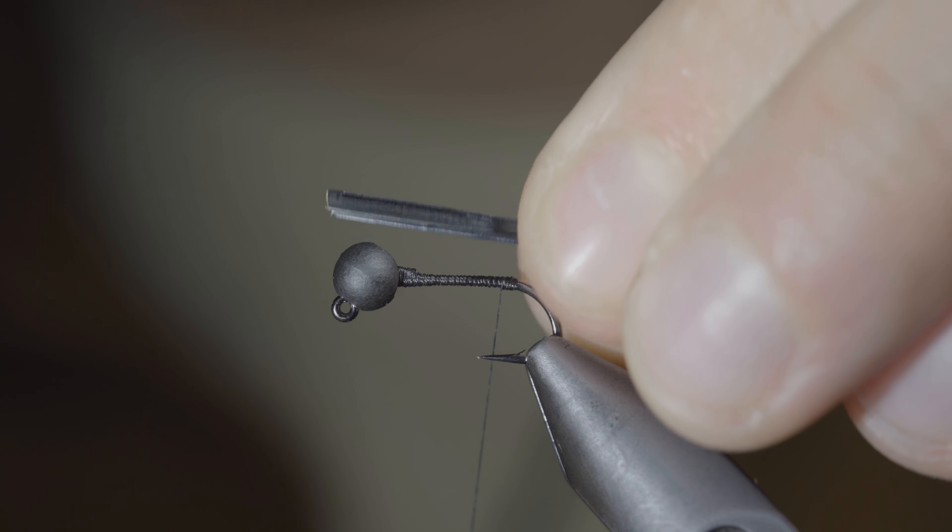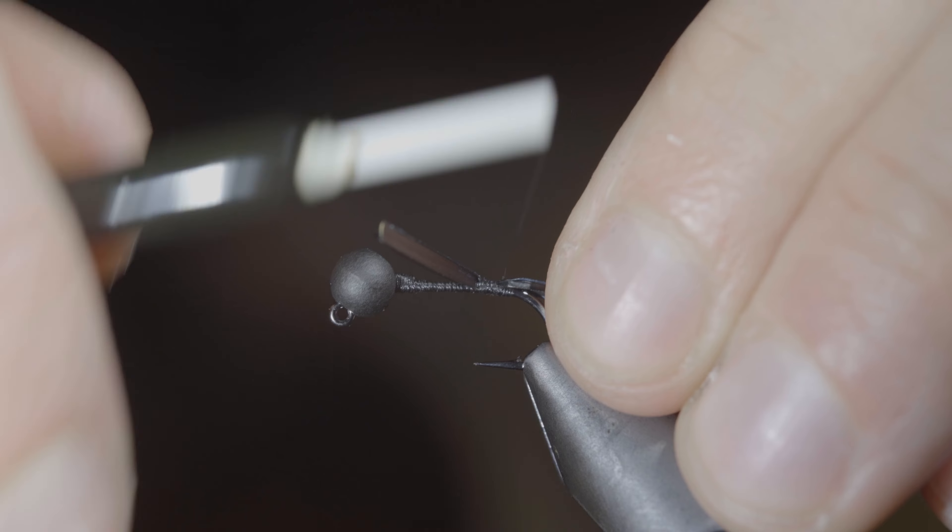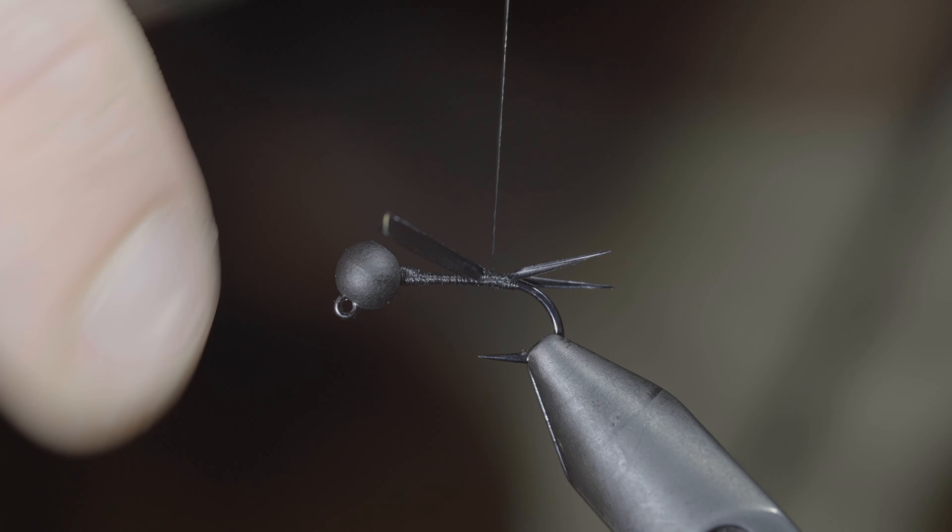We'll then grab some black biots, snip two free, and secure them just in front of our thread buildup, which will help splay out our tails.